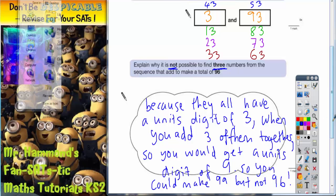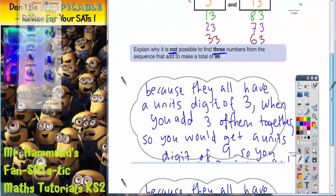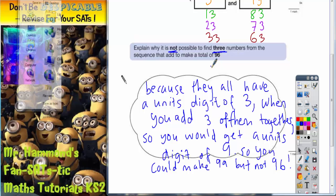Because they all end in 3's, when you have 3 of the numbers together, you're going to end up with a unit's digit of 9. And you can see that it's not going to be possible to make 96.